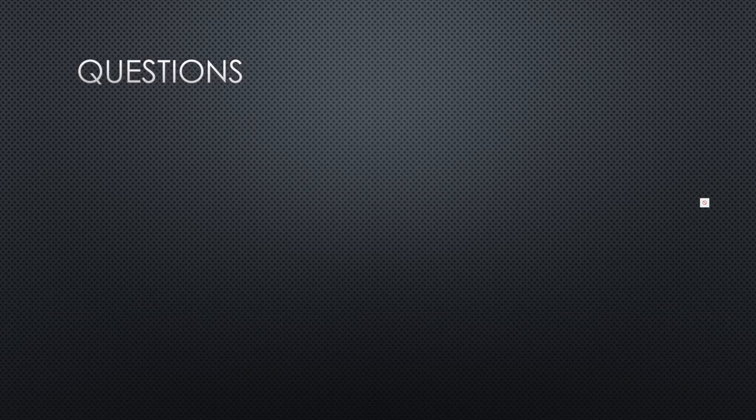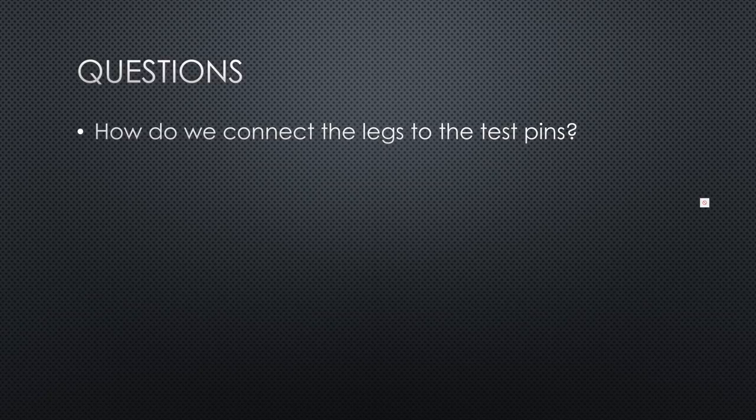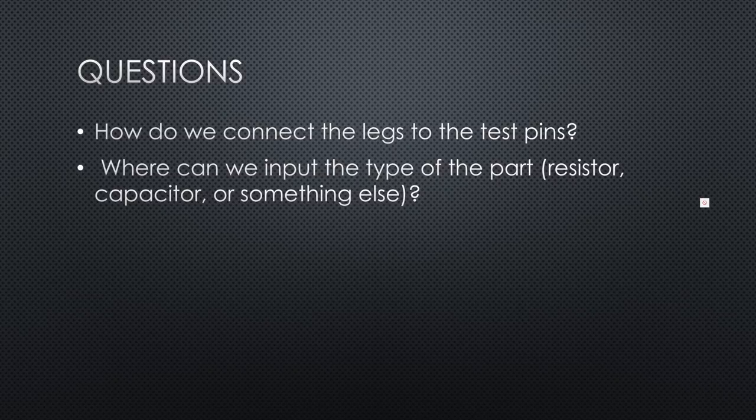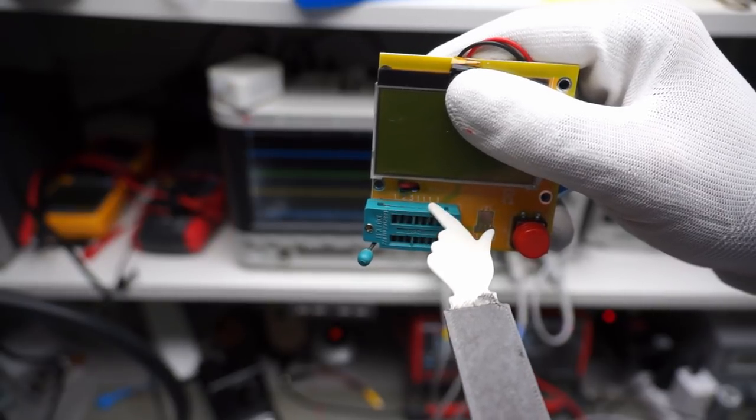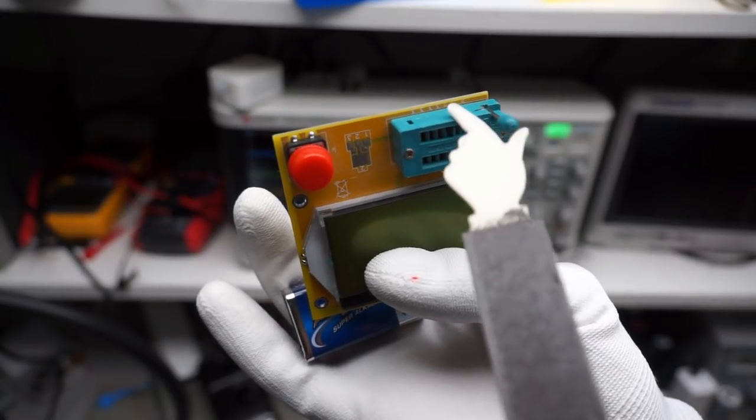If we want to test a part, the first question arises immediately. How do we connect the legs to the test pins? And where can we input the type of the part - whether it is a resistor, a capacitor or something else? The first question has a simple answer. Even if one tester has 5 and the others have 14 pins, all devices have 3 test pins. The remaining pins are somehow connected to these 3 pins. Usually you find the numbers on the PCB close to the pins, labeled 1, 2, and 3. Pay attention! Not all devices use the same principle. For example, this one has a weird assignment on one side of the socket.